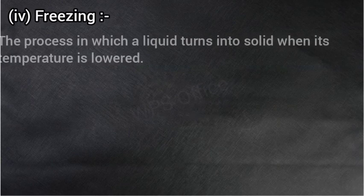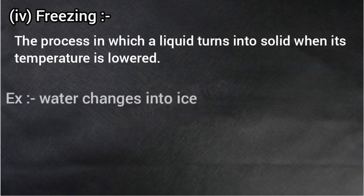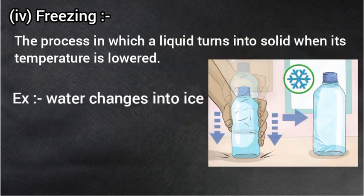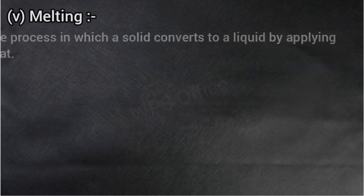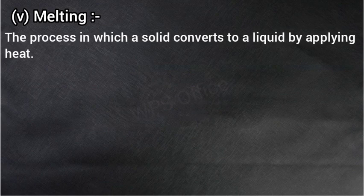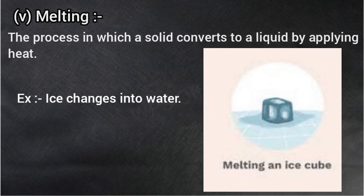Freezing — the process in which a liquid turns into solid when its temperature is lowered. ऐसी प्रक्रिया जिसमें किसी द्रव का temperature कम कर दिया जाए, तो वह जम जाता है. For example: water changes into ice — जब पानी को freeze में रख देते हैं, तो यह बर्फ में बदल जाता है और solid हो जाता है. Melting — the process in which a solid converts to a liquid by applying heat. जब किसी solid को गर्म करने के बाद वह liquid के रूप में पिघल जाता है. For example: ice changes into water — बर्फ पानी में बदल जाती है जब उसे गर्म किया जाता है.